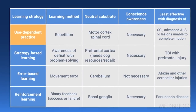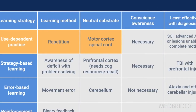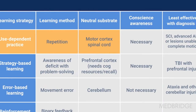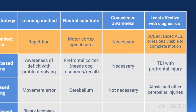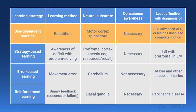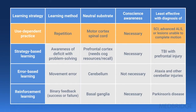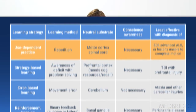So this is a little review. Use-dependent learning uses repetition and the motor cortex as its neural substrate. Conscious awareness is necessary, so it will be least effective with some diagnoses. For instance, if someone has a complete spinal cord injury, they simply don't have the nervous system to do repetition. Similarly, advanced ALS or lesions of the brain severely affecting the motor cortex mean they just can't do it because they don't have the resources.